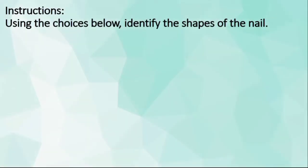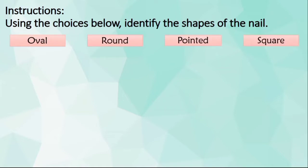Using the choices below, identify the shapes of the nail. You only have 5 seconds to answer each question. The choices are oval, round, pointed, square, squoval, and triangle.